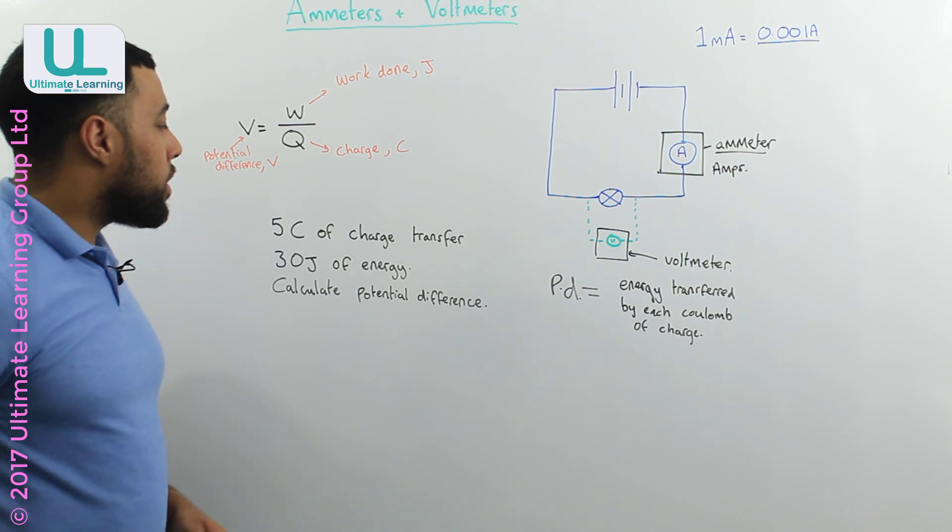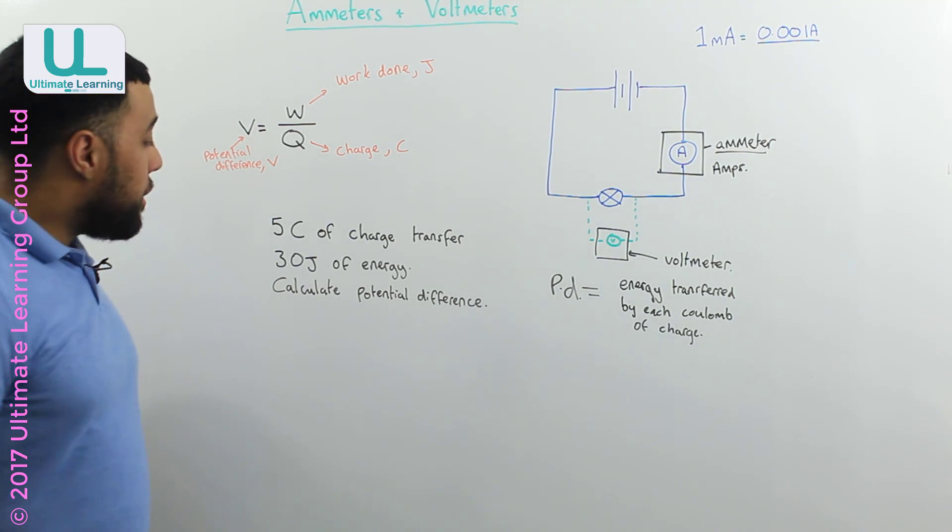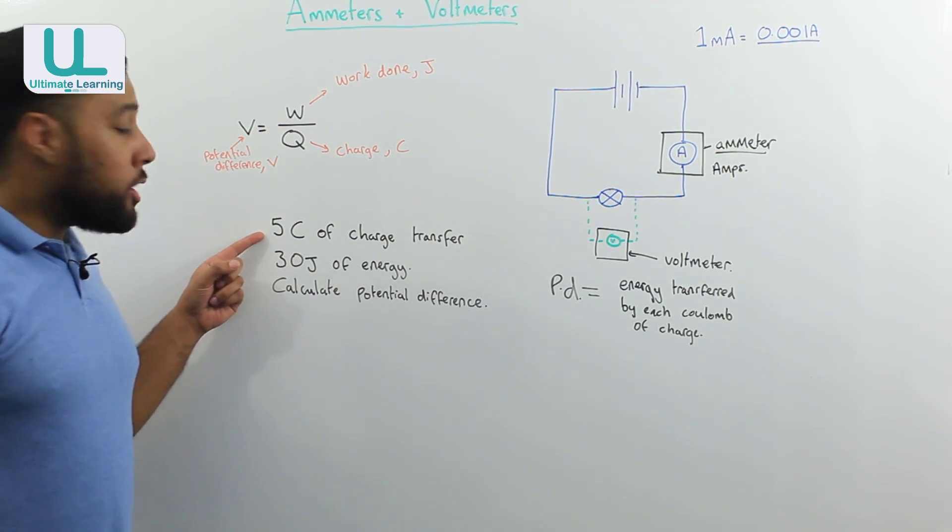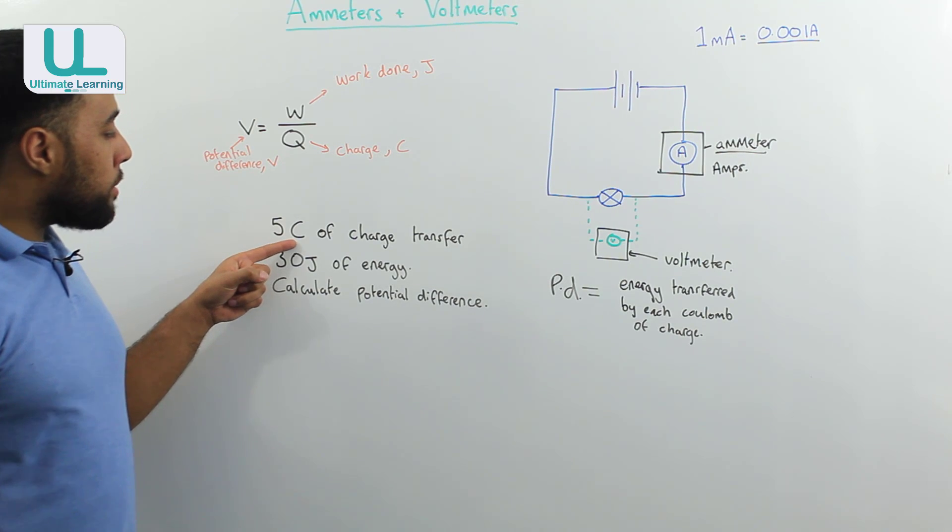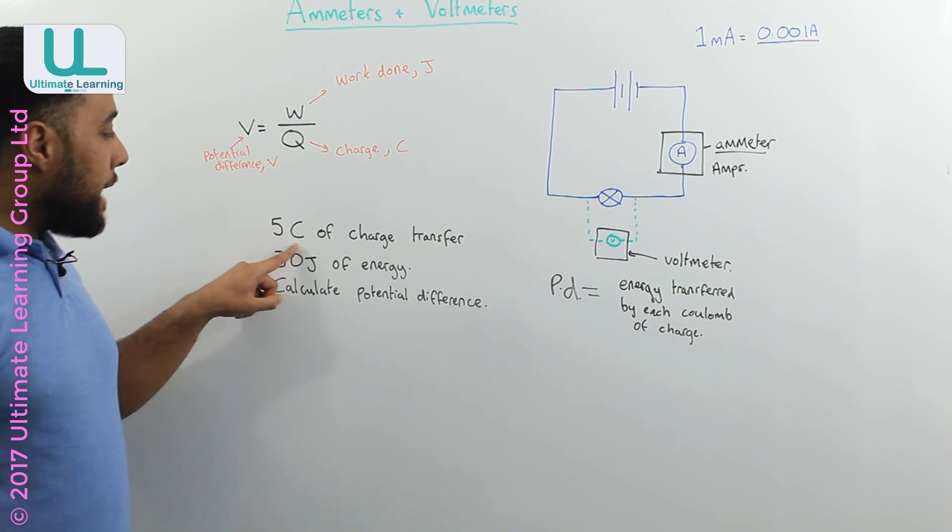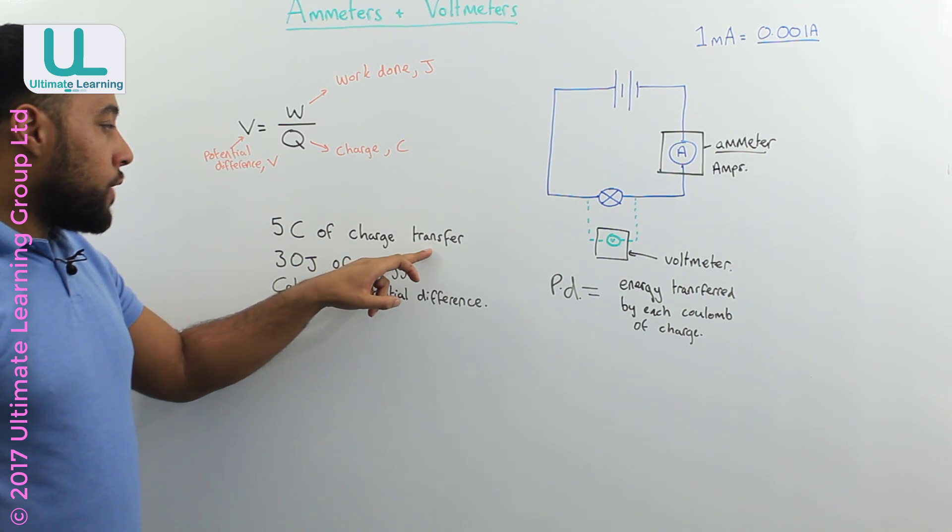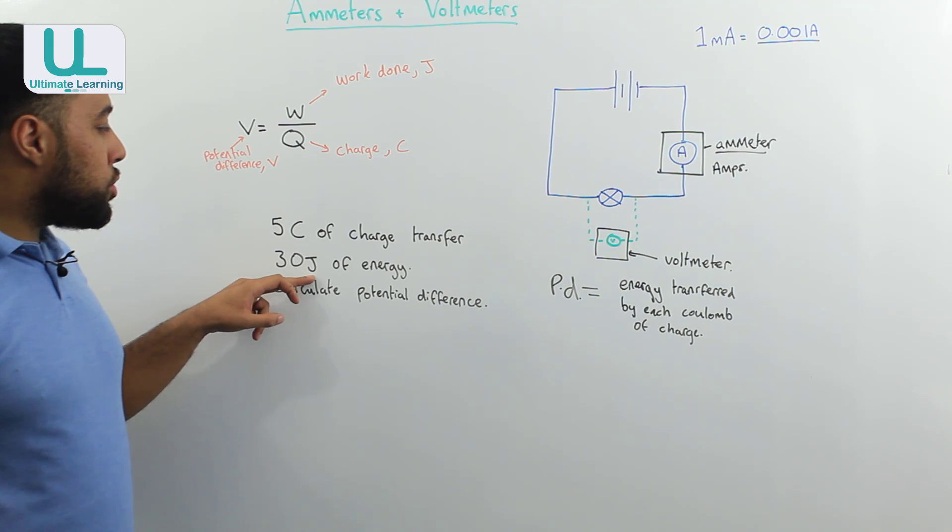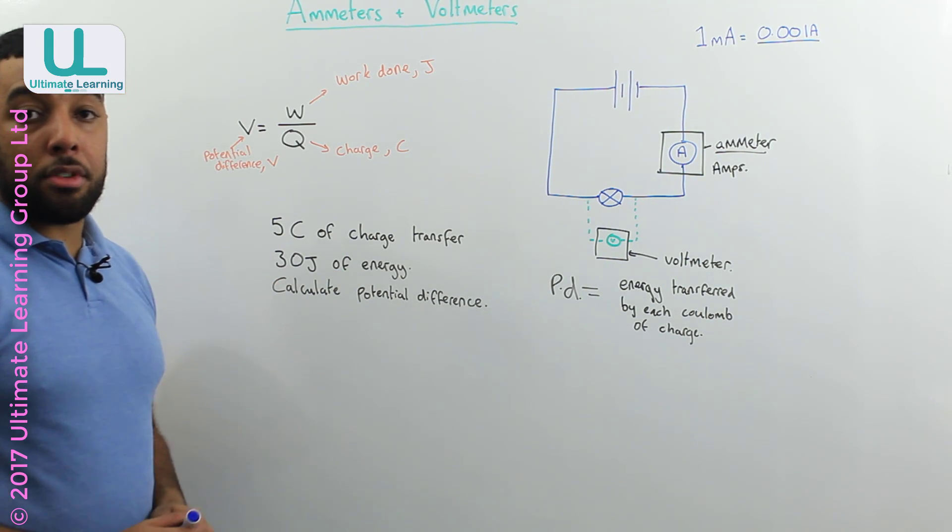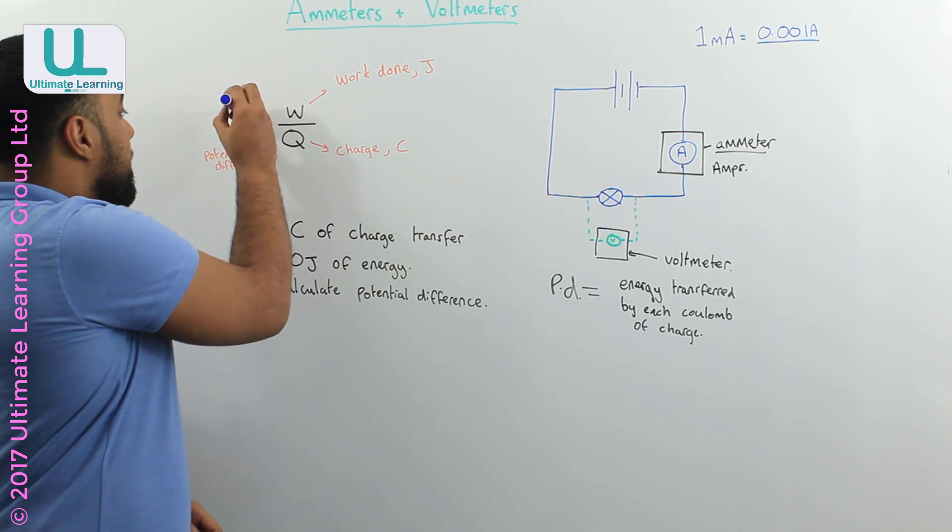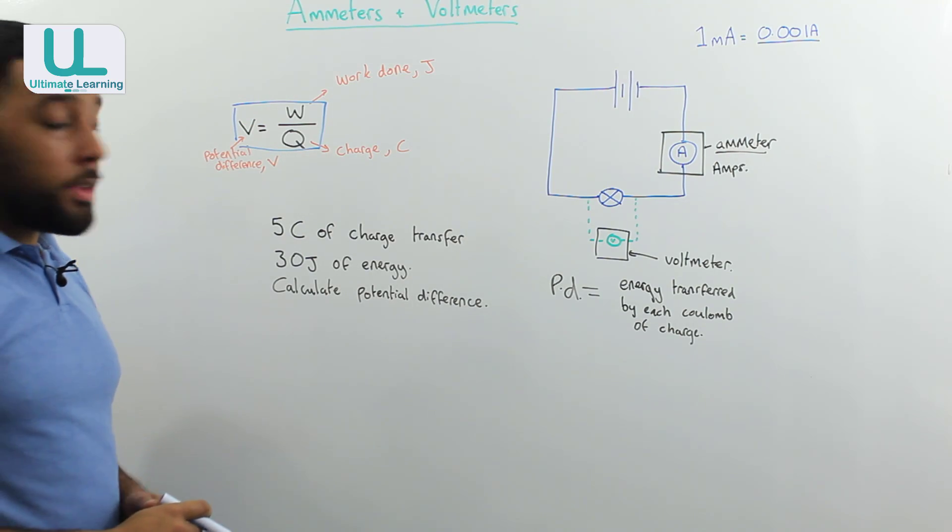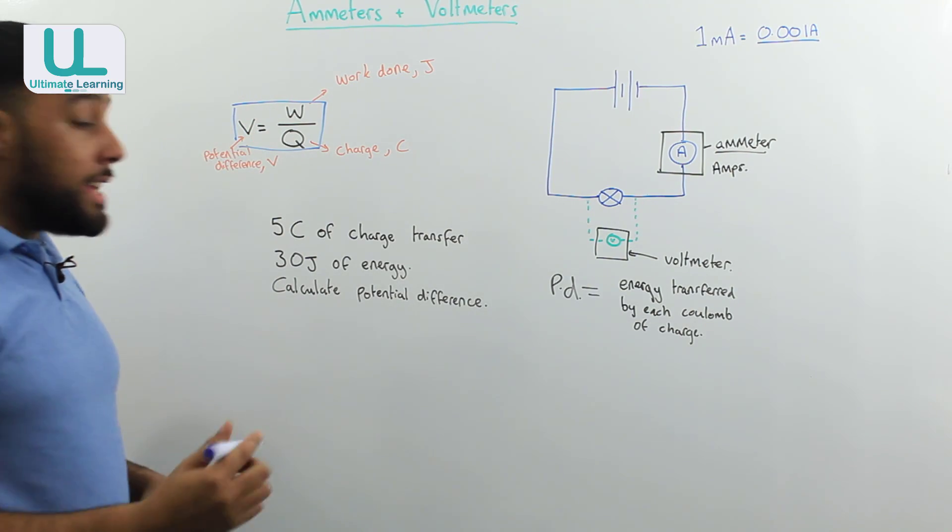So let's take a look at a question that you guys may face in your exam. And I've just put one at the bottom here. It says 5 coulombs of charge, remember the capital C stands for charge, so 5 coulombs of charge transfer 30 joules of energy. Calculate potential difference. So I can look at my equation at the top, and I can put this equation into a triangle.